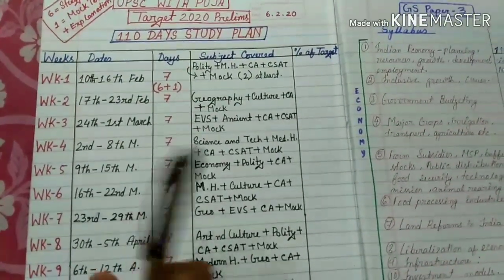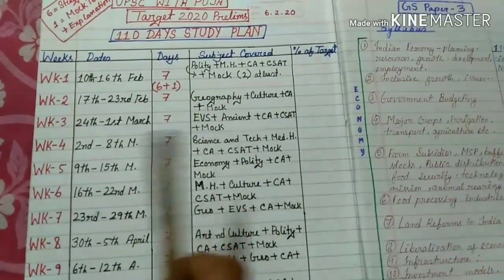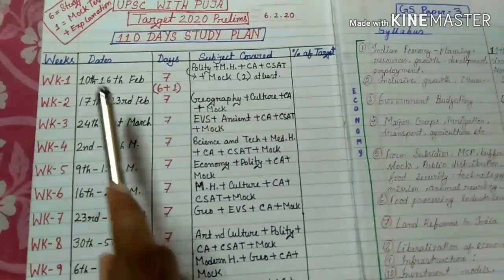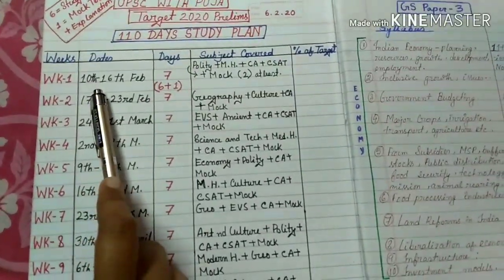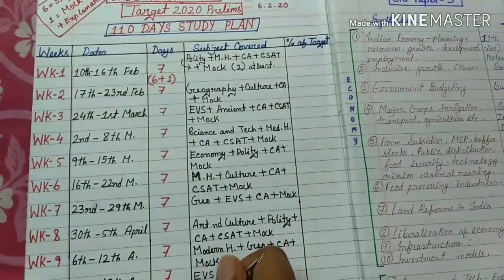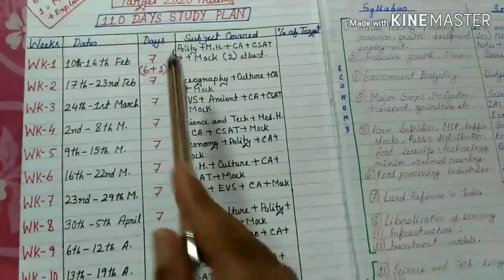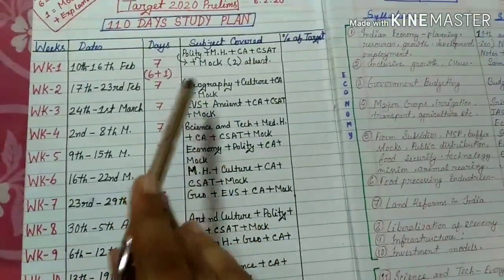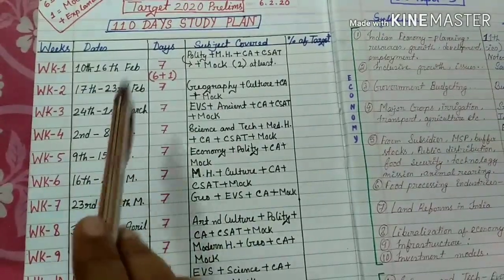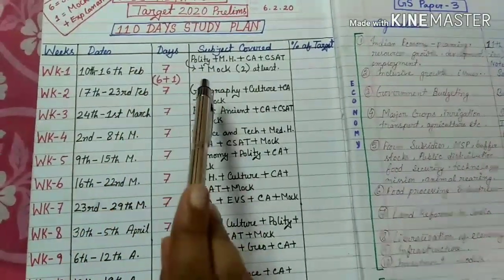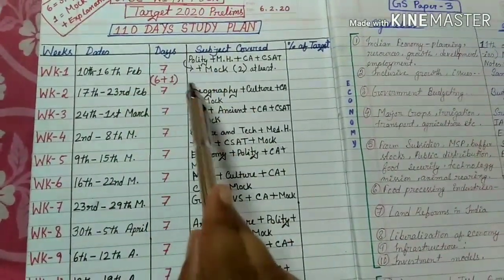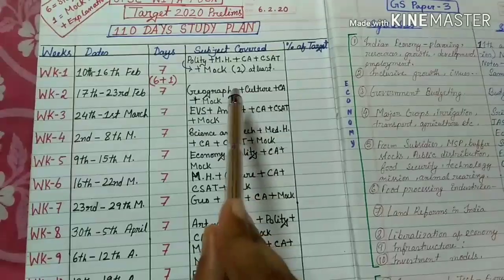First we will discuss about how many weeks we have in this period. If you start from 10th of February and finish by 29th of May, then you have approximately 16 weeks and 110 days. Monday to Saturday is for study and revision, and Sunday is for mock test.